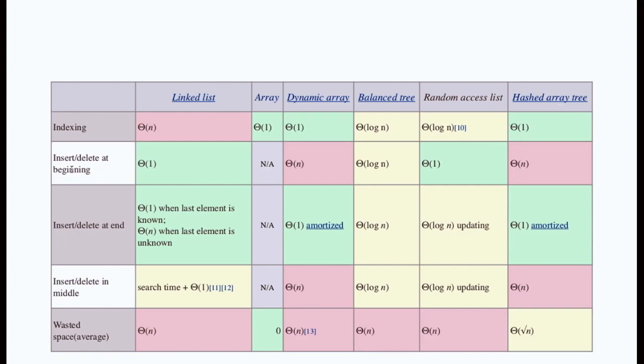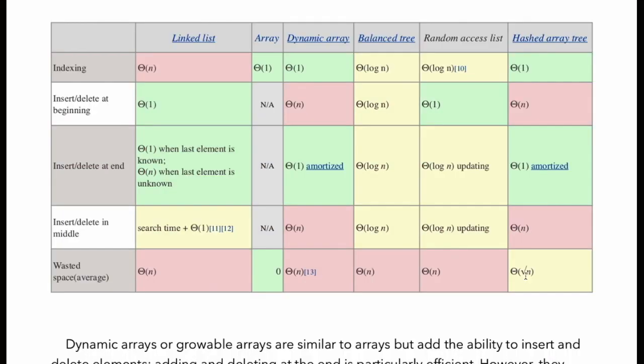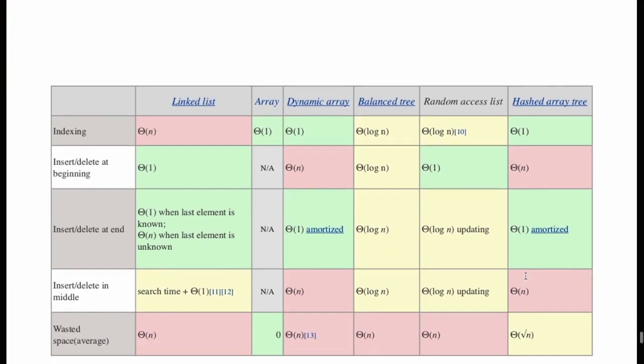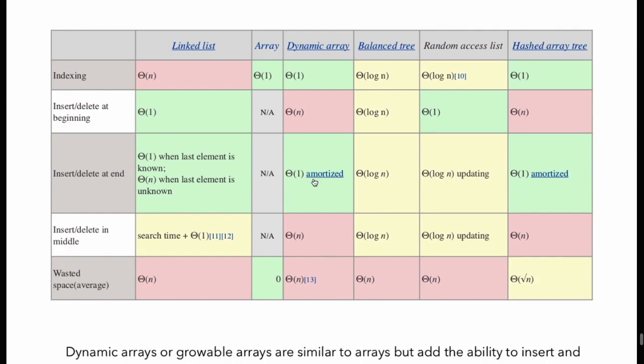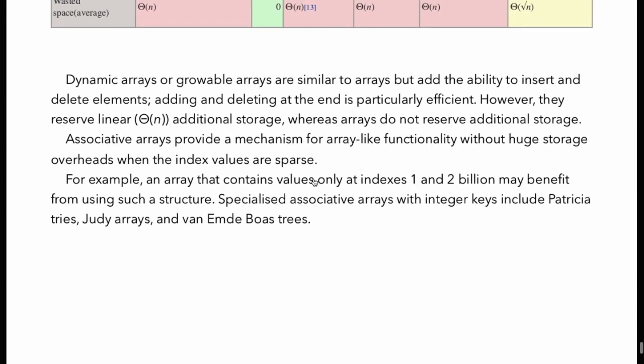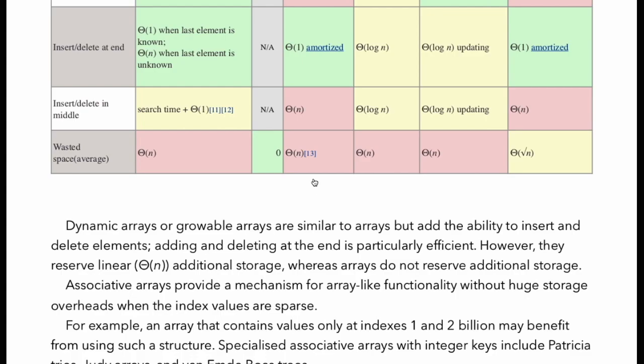And when we insert and delete at beginning then linked list takes big O(1) because it directly inserts or deletes through head from beginning. And it doesn't have any complexity at insertion at beginning. I think you go through all this to get better understanding. But the chapter is not finished. We have to go through the board.